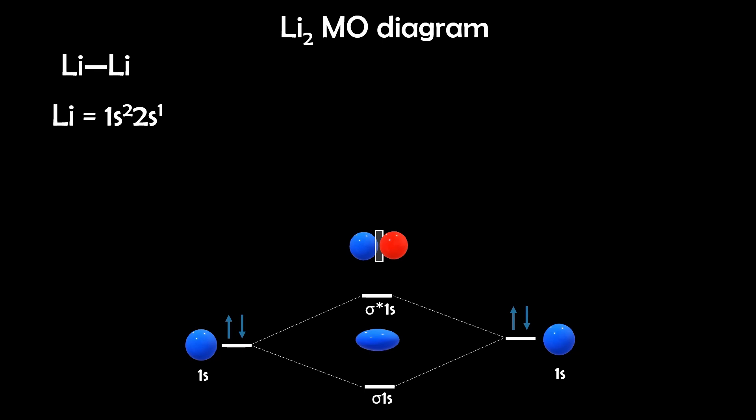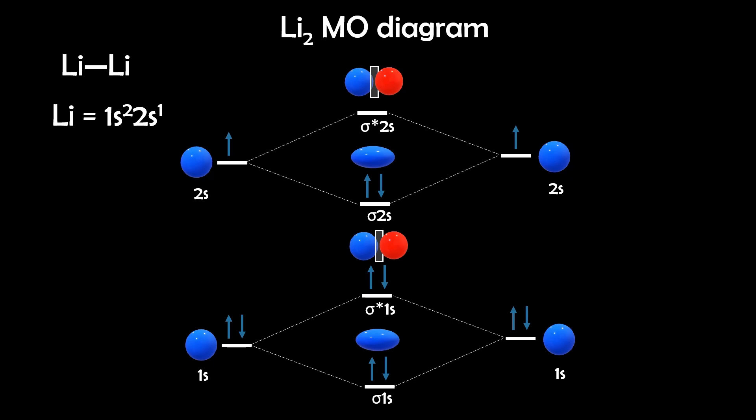The 1s orbitals form sigma 1s and sigma star 1s orbitals. And the 2s orbitals form sigma 2s and sigma star 2s orbitals. We assign symmetry labels based on the type of overlap. So sigma for bonding and sigma star for antibonding are correct, and fill the molecular orbitals according to the Aufbau principle, from lowest to highest energy.